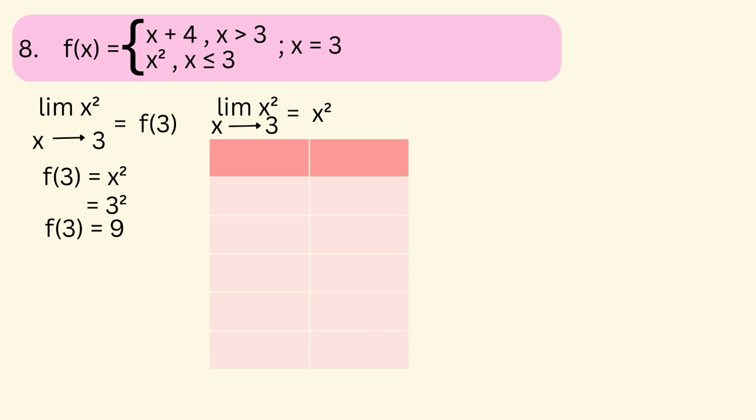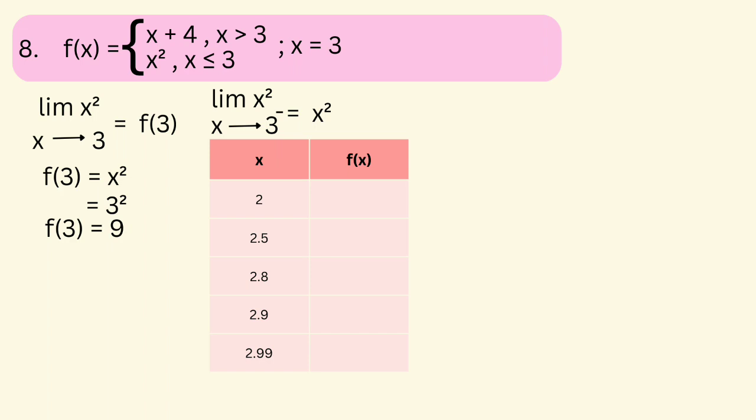We proceed to making a table. The function used on the left side is f(x) = x², since the restriction is x ≤ 3. The limit of f(x) as x approaches 3 from the left, with x values 2, 2.5, 2.8, 2.9, and 2.99. Results: for 2 we get 4; for 2.5 we get 6.25; for 2.8 we get 7.84; for 2.9 we get 8.41; for 2.99 we get 8.9401. The limit of f(x) as x approaches 3 from the left equals 9.